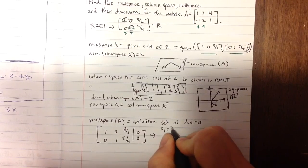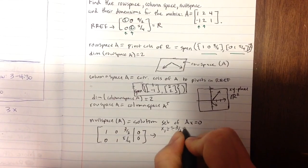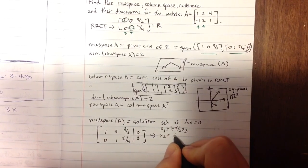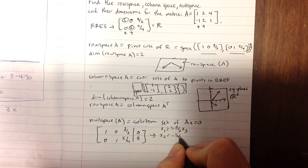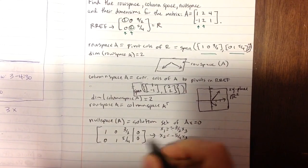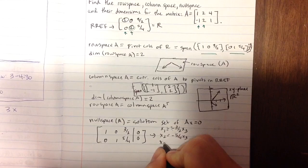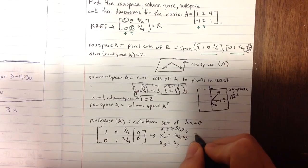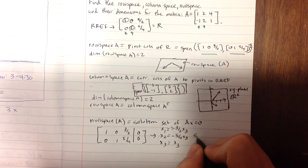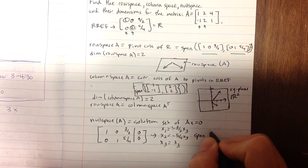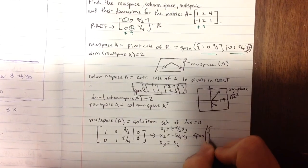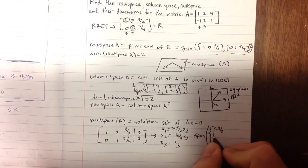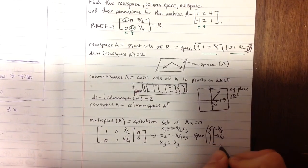I'm going to have X1 equals negative 3 halves X3, bringing that X3 over. X2 equals negative 5 fourths X3. X3 is free. This is a good representation of my null space. I can write it as a span as well, the span of this lone vector: negative 3 halves, negative 5 fourths, and 1. I just take the coefficients in front of X3.